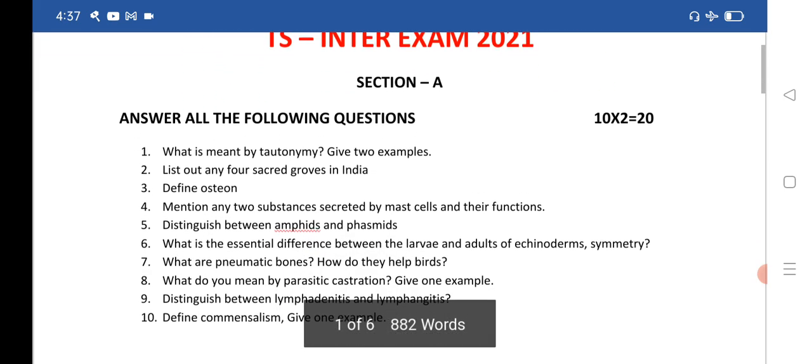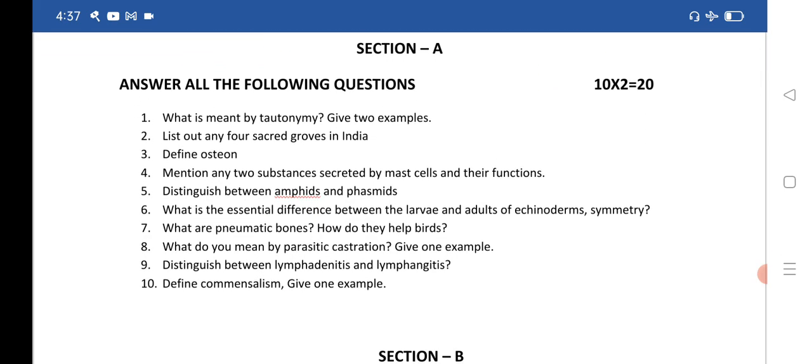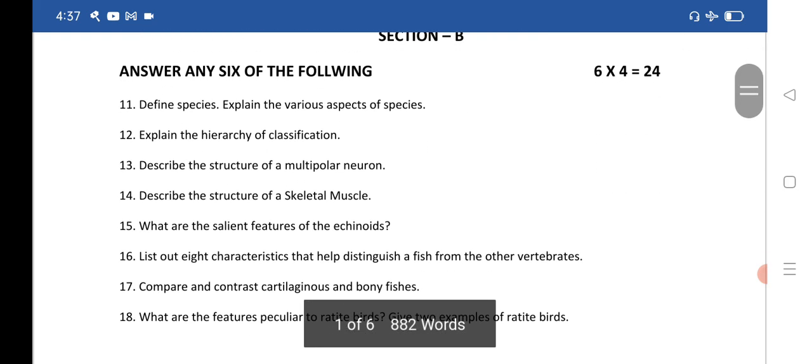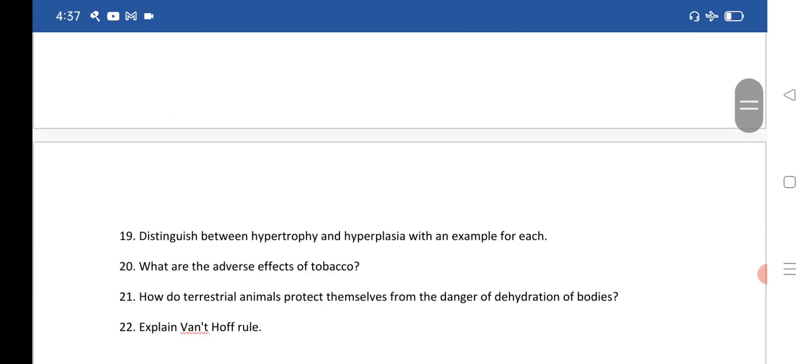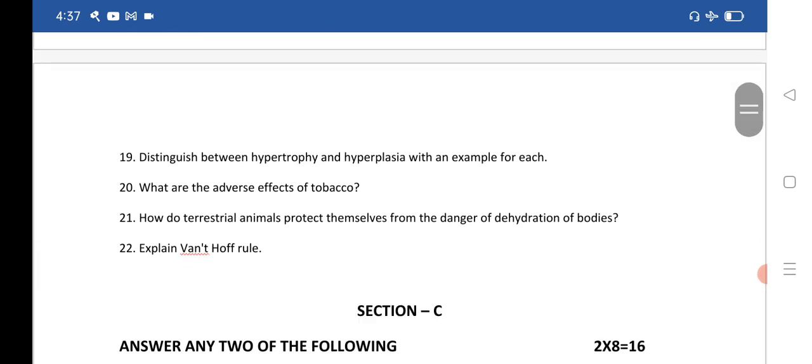Let us see the important questions of Zoology for first year. First paper 1, 10 VSAQs, very important VSAQs. Next is for section B for 4 marks 1 to 18. There are questions from 1 to 22. So remaining I will show you here. You can take the screenshot 19 to 22. These are very important SAQs.